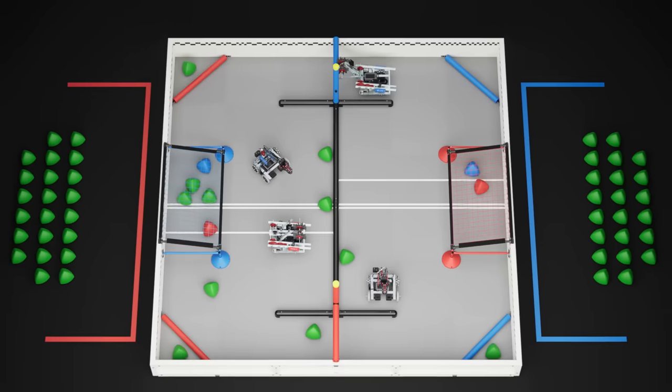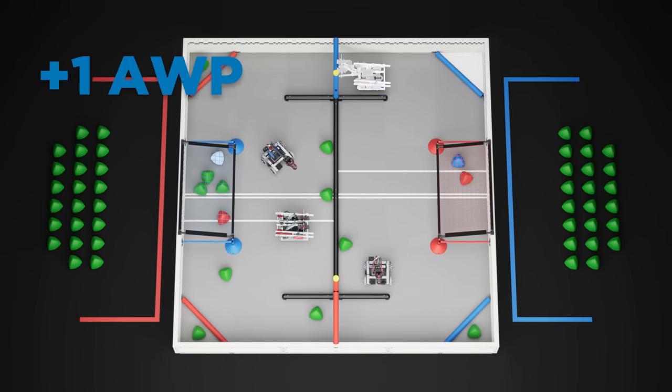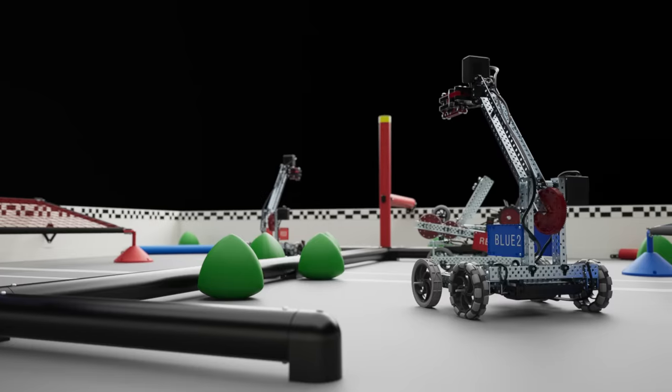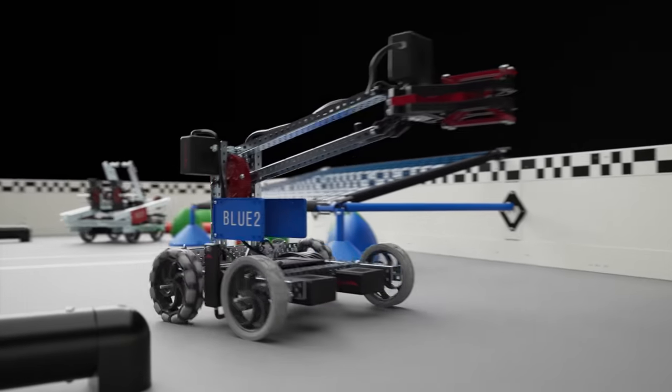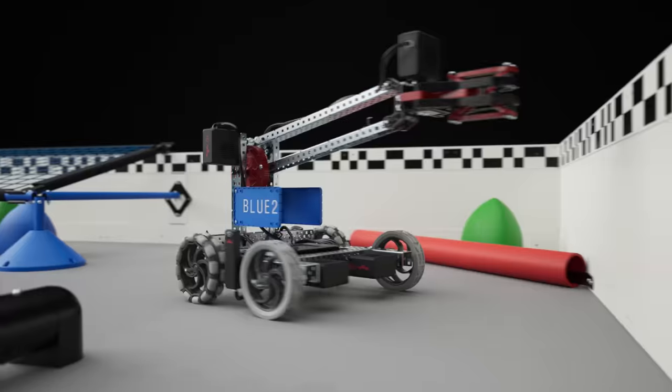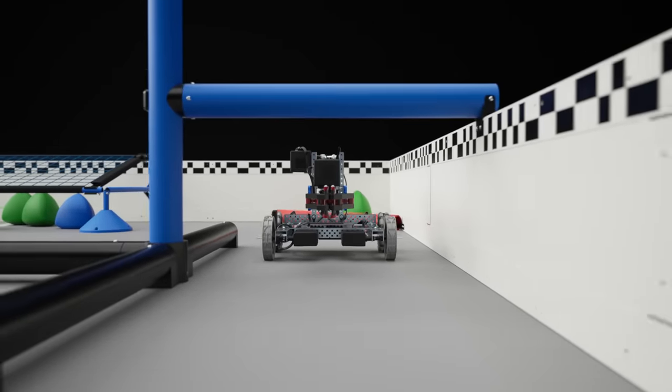Alliances may also earn an additional autonomous win point by completing certain tasks during the autonomous period. The one-minute, 45-second driver control period begins once the autonomous bonus winner has been determined. During the driver control period, robots are free to move about the field.